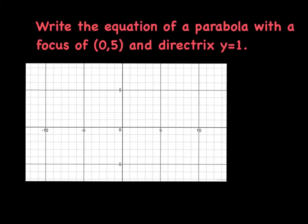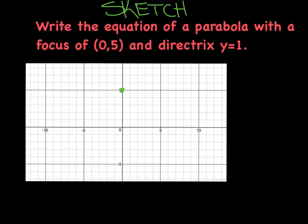I've got a bunch of examples for you tonight, and we're going to tackle the biggest bear right out of the gates. I've already imported my graph paper because I think it's so important to sketch these. In our notebook, I want to emphasize drawing pictures and sketching all of these. I've got the focus at (0, 5) and the directrix at y equals 1, so I'm drawing a dotted line at 1. The vertex has to be halfway, which would be at 3, and it opens upward because it opens toward the focus but away from the directrix.